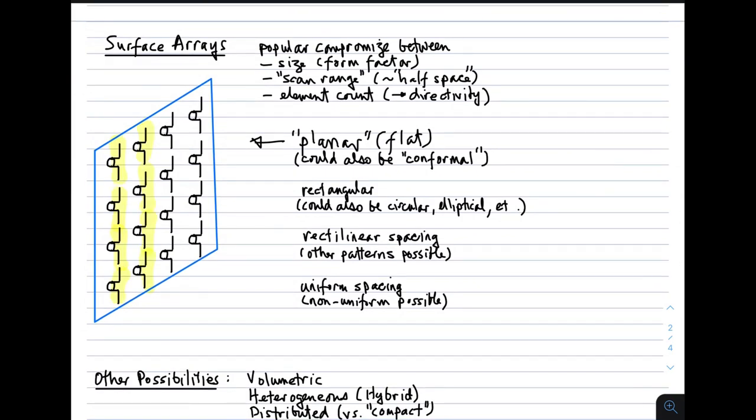Next, surface arrays. Surface arrays tend to be a popular compromise. They're popular because they represent a compromise between size, form factor, scan range, the range of angles over which you can form a beam with approximately the same beam width, and element count or directivity. A lot of arrays that are emerging these days are surface arrays. They are planar or flat, but could also be conformal. It's not necessarily the case that such arrays would always be a completely flat surface. They might be rounded somehow to fit the surface they are mounted on, like the side of a vehicle.